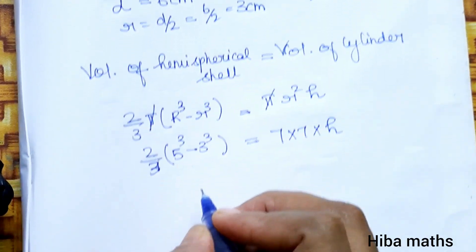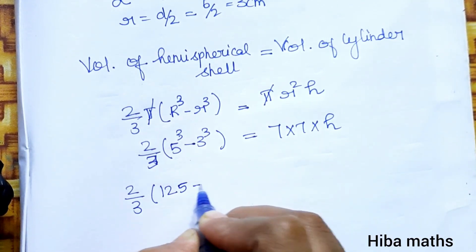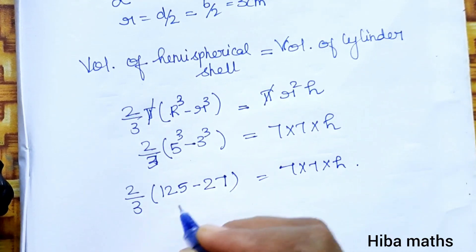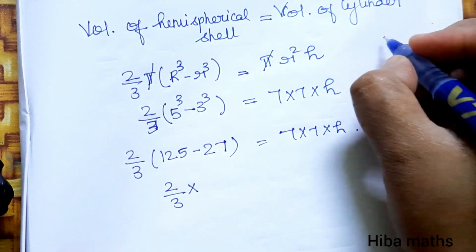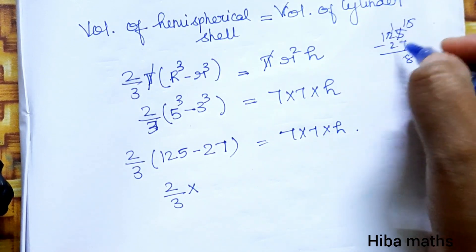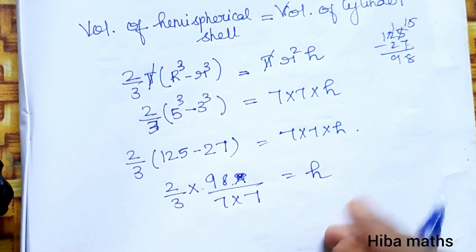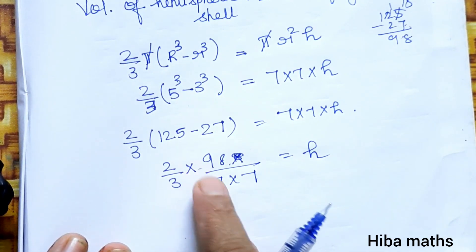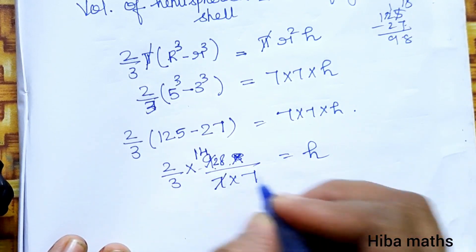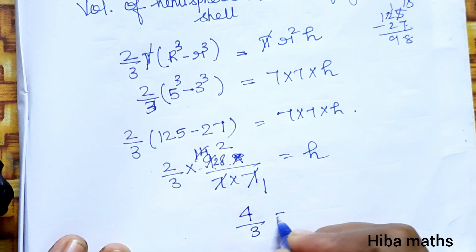So we have 2/3 × (5³ − 3³) = 7 × 7 × height. That gives 2/3 × (125 − 27) = 49 × height. Then 2/3 × 98 = 49 × height. Dividing both sides by 49: height equals 196 divided by 147, which simplifies to 4/3.